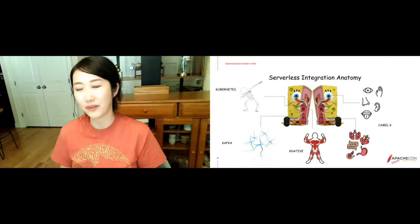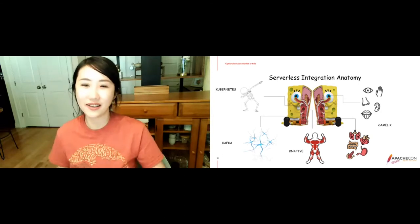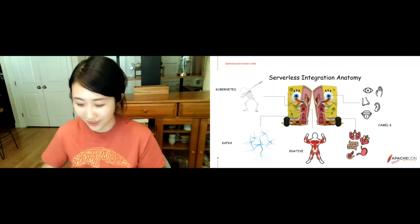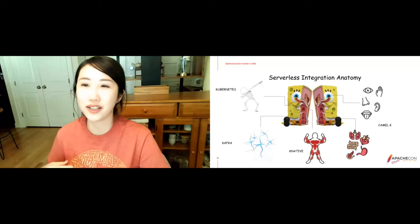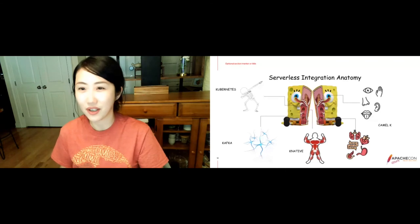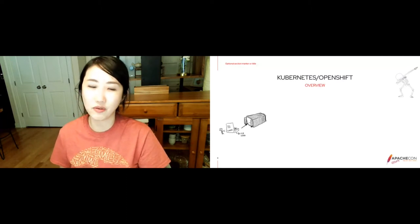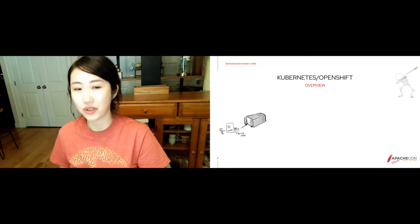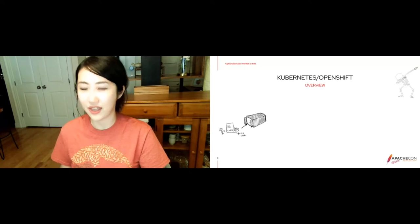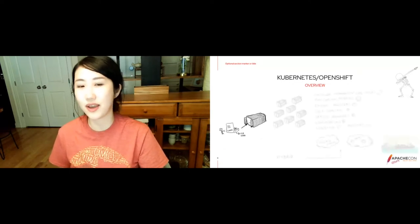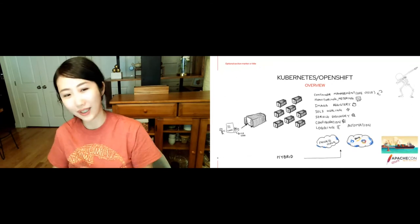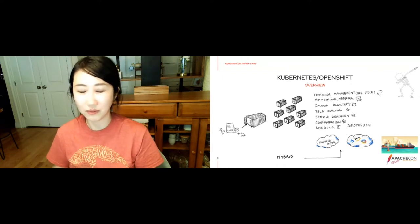Think of it like SpongeBob — our wonderful serverless machine has a backbone, a nervous system, muscles, and organs that work everything together. So let's look at what Kubernetes and OpenShift are for people who don't know. Kubernetes and OpenShift are platforms that help you orchestrate your container environment. As a developer, you write your code, build it, put it into a container with a Docker build, and it builds the image for you.